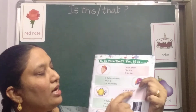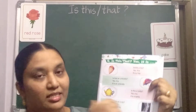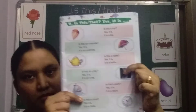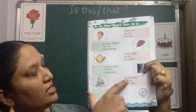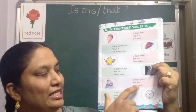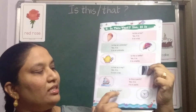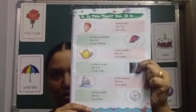Is this a kettle? Yes, it is a kettle. Is this a yard? Yes, it is a yard. Is that a clock? Yes, it is a clock.